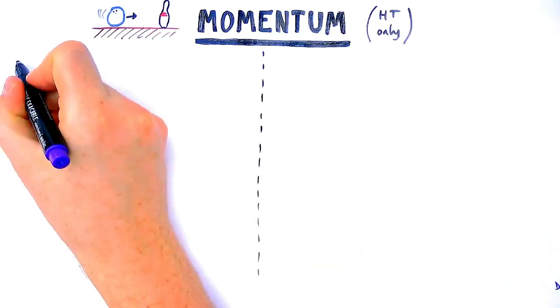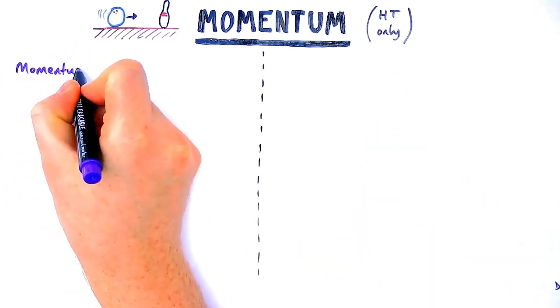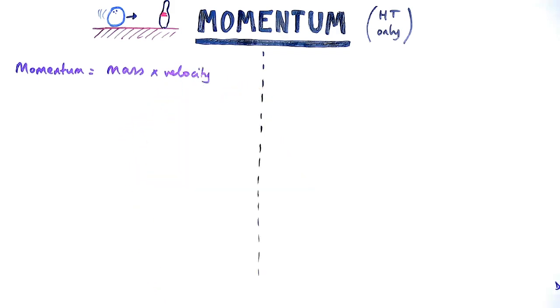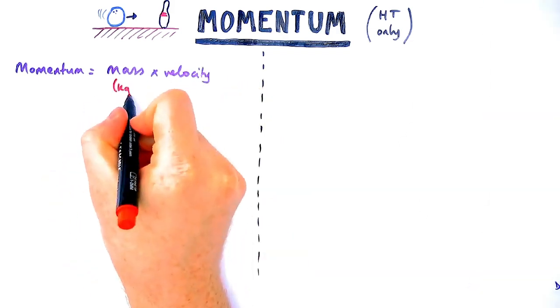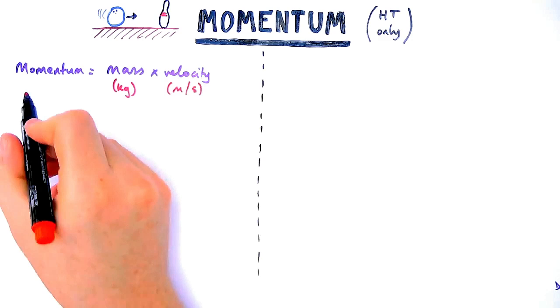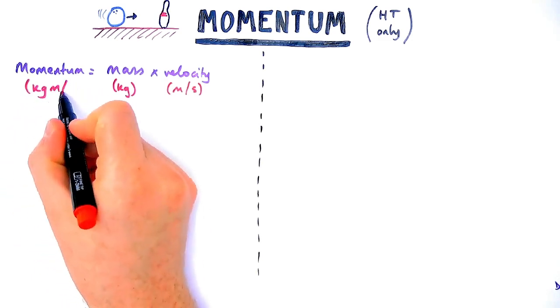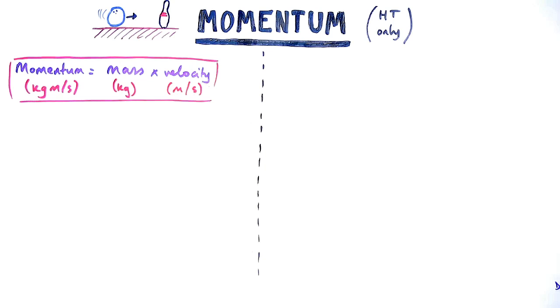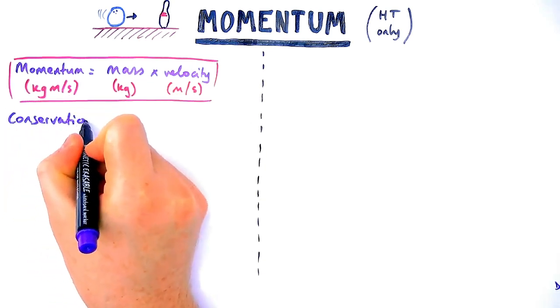If you are a higher tier science student you need to know about momentum. Momentum is given by an equation: mass times velocity equals momentum. For mass the units are kilograms, velocity is meters per second. You can work out the units for momentum by multiplying those together which gives you kg m/s or kilogram meters per second.